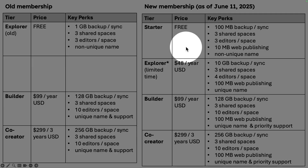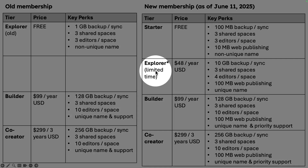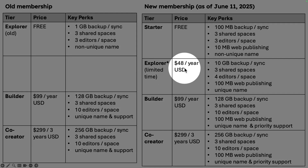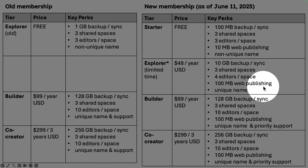That is a major change to the free plan. Right now there's a limited-time offer called the Explorer Aster, listed at $48 US dollars per year. It comes with 10 gigabytes of backup and sync, three shared spaces, four editors, and 100 megabytes of web publishing.